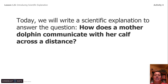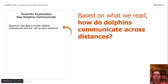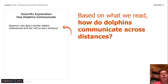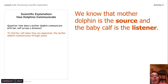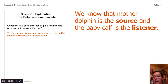We're going to write a scientific explanation to answer the question: how does a mother dolphin communicate with her calf across the distance? Get a brand new piece of paper, write your name and today's date, and write the question. We're going to write this together, so no worries — stop the video if you need to. Based on what we've read so far, how do dolphins communicate across distances? We know that they communicate through sound. To find her calf when they are separated, the mother dolphin communicates through sound. We know that the mother dolphin is a source and the baby calf is the listener.